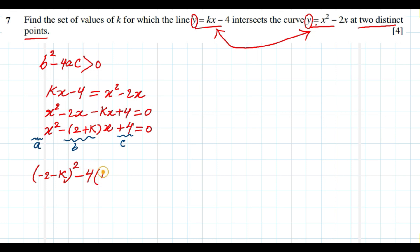4 times a is 1, c is 4, must be greater than zero.